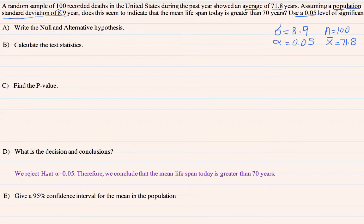Now, write the null and alternative hypothesis. Go to the claim. What is the claim? The mean life span today is greater than 70 years. It means H₀: μ equals 70, which is null hypothesis. Then, alternative hypothesis, which is Hₐ, should be the claim. What is the claim? μ greater than 70.